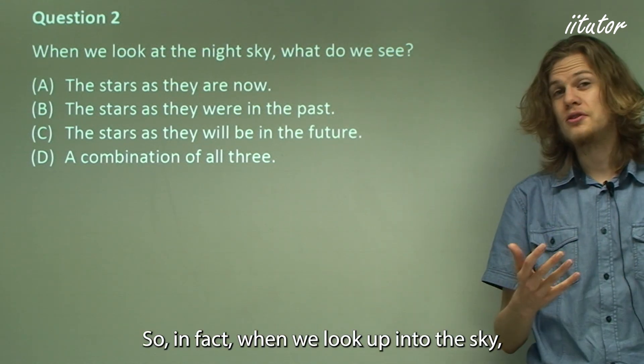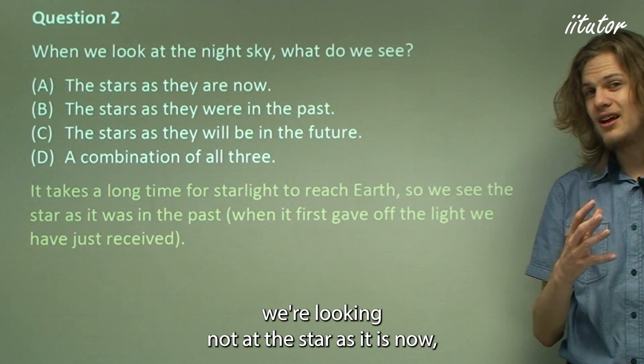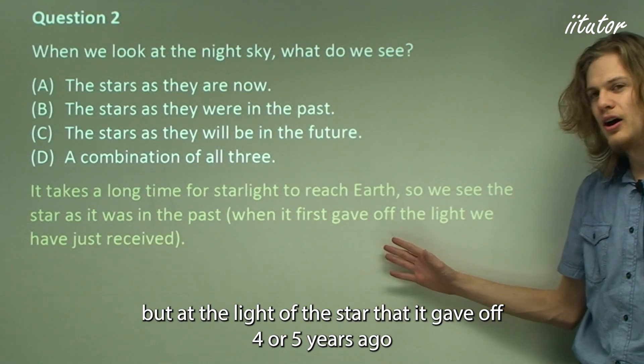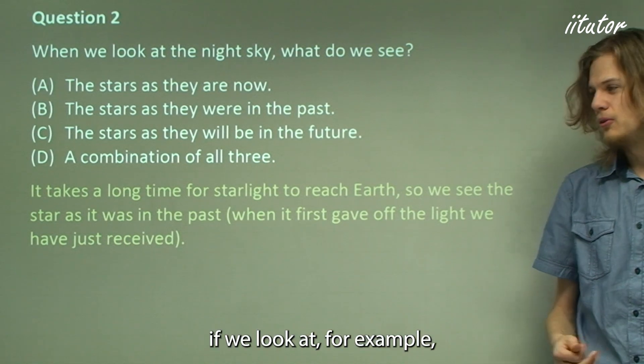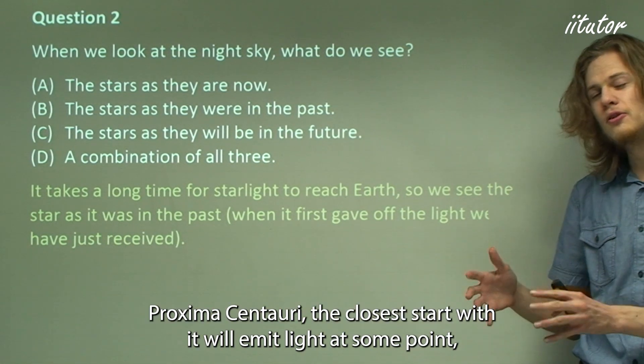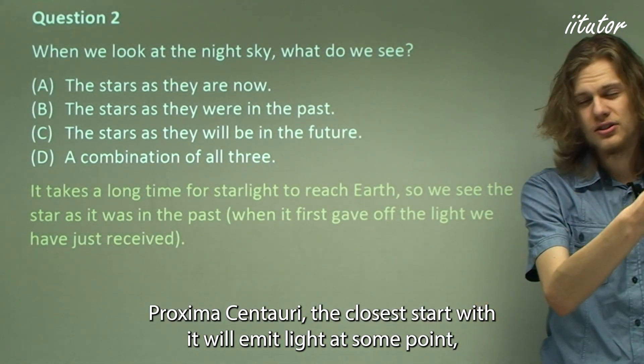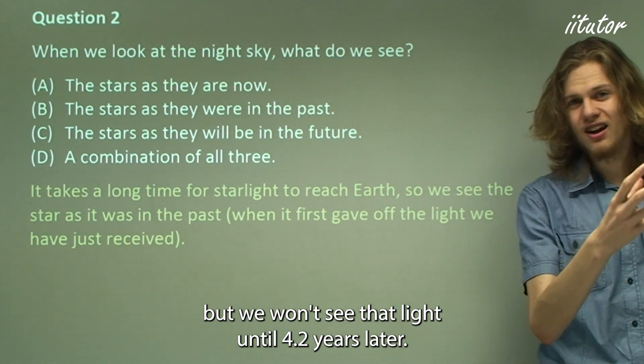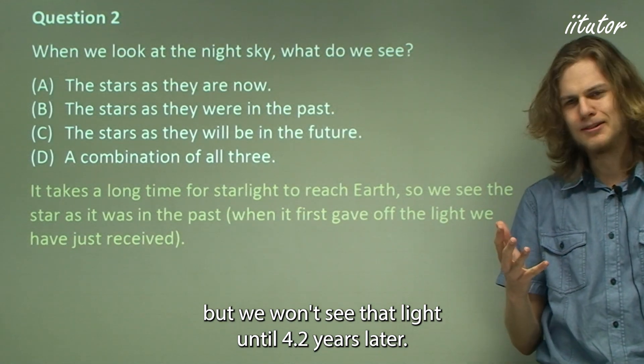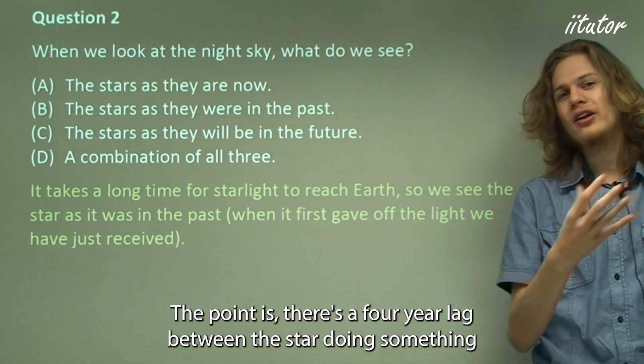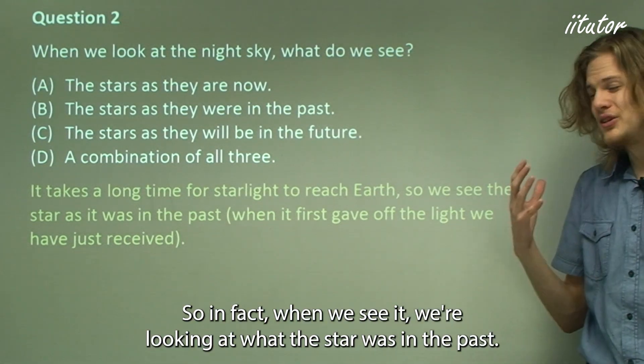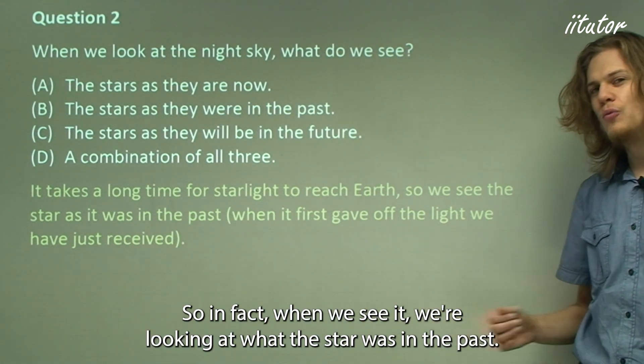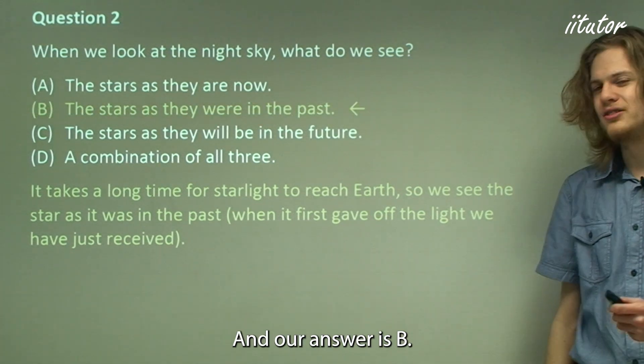If we look at, for example, Proxima Centauri, the closest star to Earth, it will emit light at some point, but we won't see that light until 4.2 years later. The point is there's a four-year lag between the star doing something and us seeing it. So in fact when we see it, we're looking at what the star was in the past, and our answer is B.